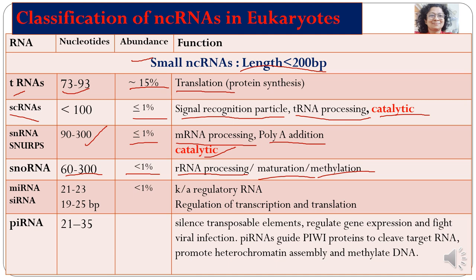Other small non-coding RNA types include microRNA (miRNA), which has 21 to 23 bases, and small interfering RNA (siRNA), which has 19 to 25 base pairs. They compose less than one percent of total RNA and are regulatory in nature, regulating transcription and translation.